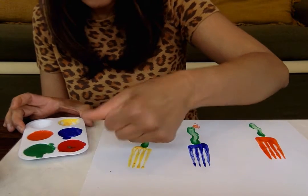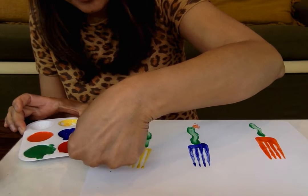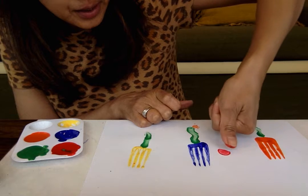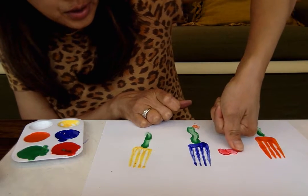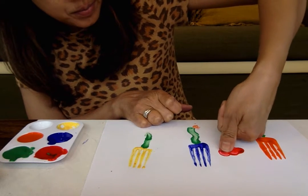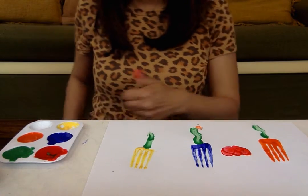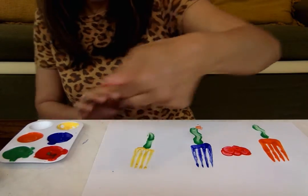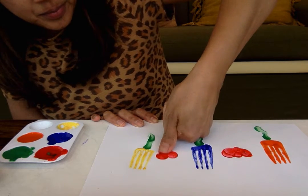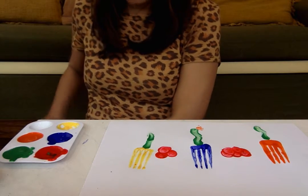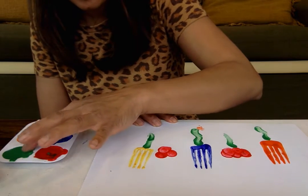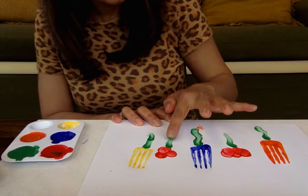Now I want to use my thumb. I'm going to pick another flower and put some green. And then you can start with my thumb.